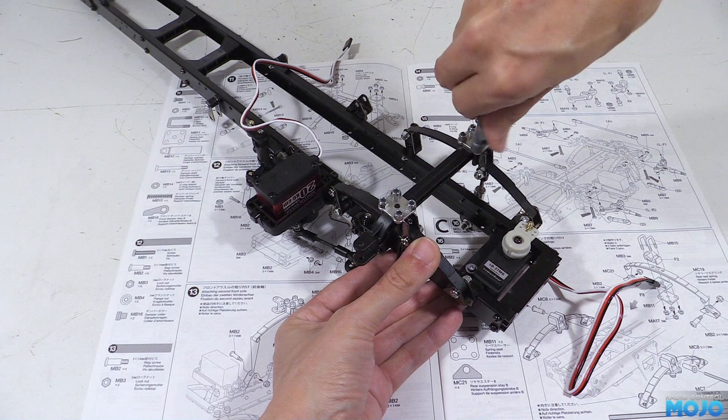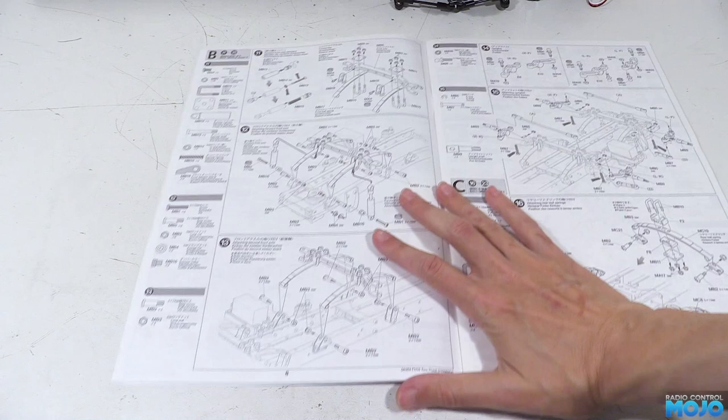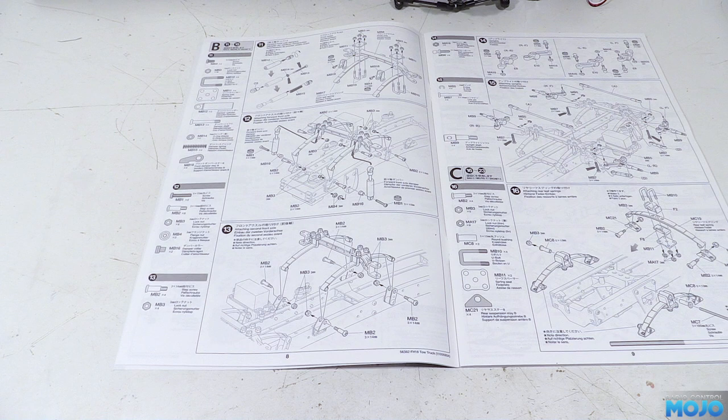Now step 13. This one is near enough exactly the same as step 12. Except we don't have any dampers to fit and the axle fits with the damper mounts towards the back. So here we have it fitted ready to go.